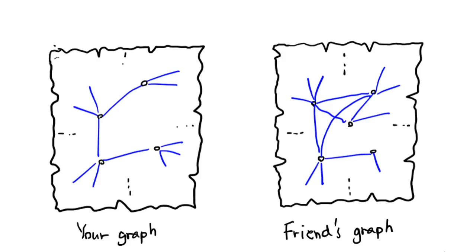The question is, what is the probability that both you and your friend end up drawing the exact same graph? In technical terms, isomorphic graphs.